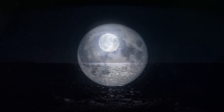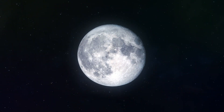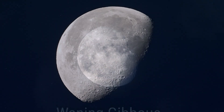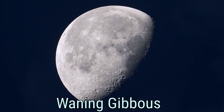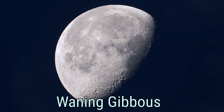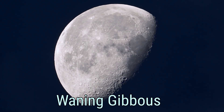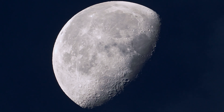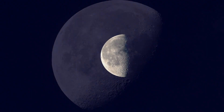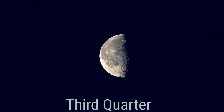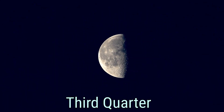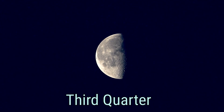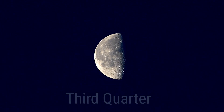Following the Full Moon, the light starts to wane. The waning gibbous phase lasts about six days, showing gradual darkening each night. This leads to the last quarter, where only half of the Moon's surface is illuminated, lasting about a day.